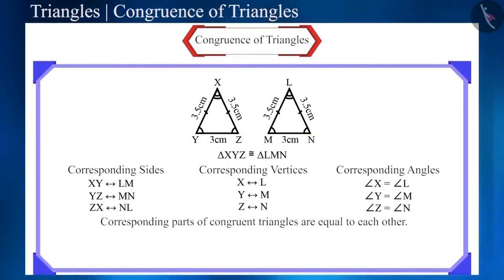From this we can conclude that the corresponding parts of congruent triangles are equal to each other. We abbreviate it as CPCT, that is, corresponding parts of congruent triangles.